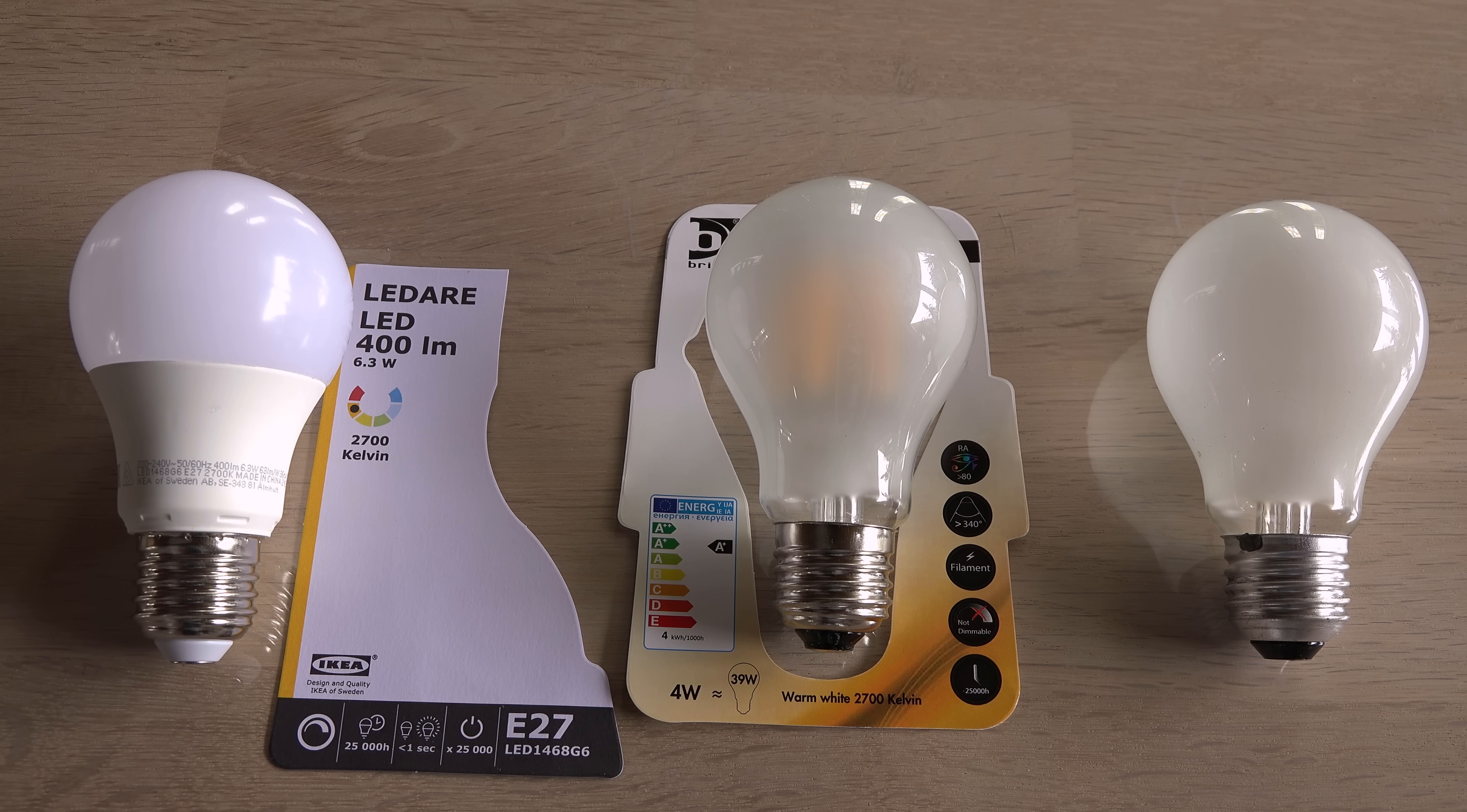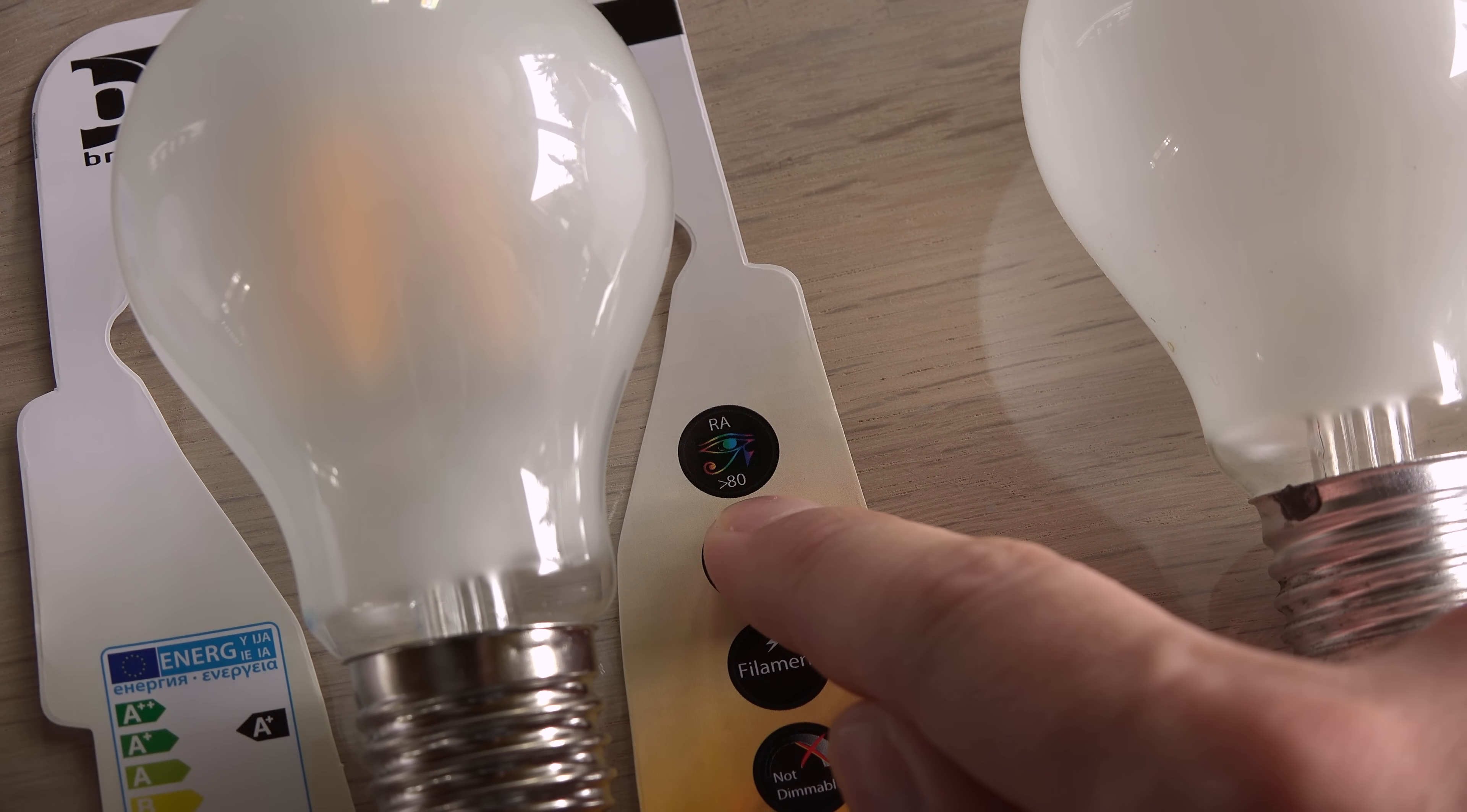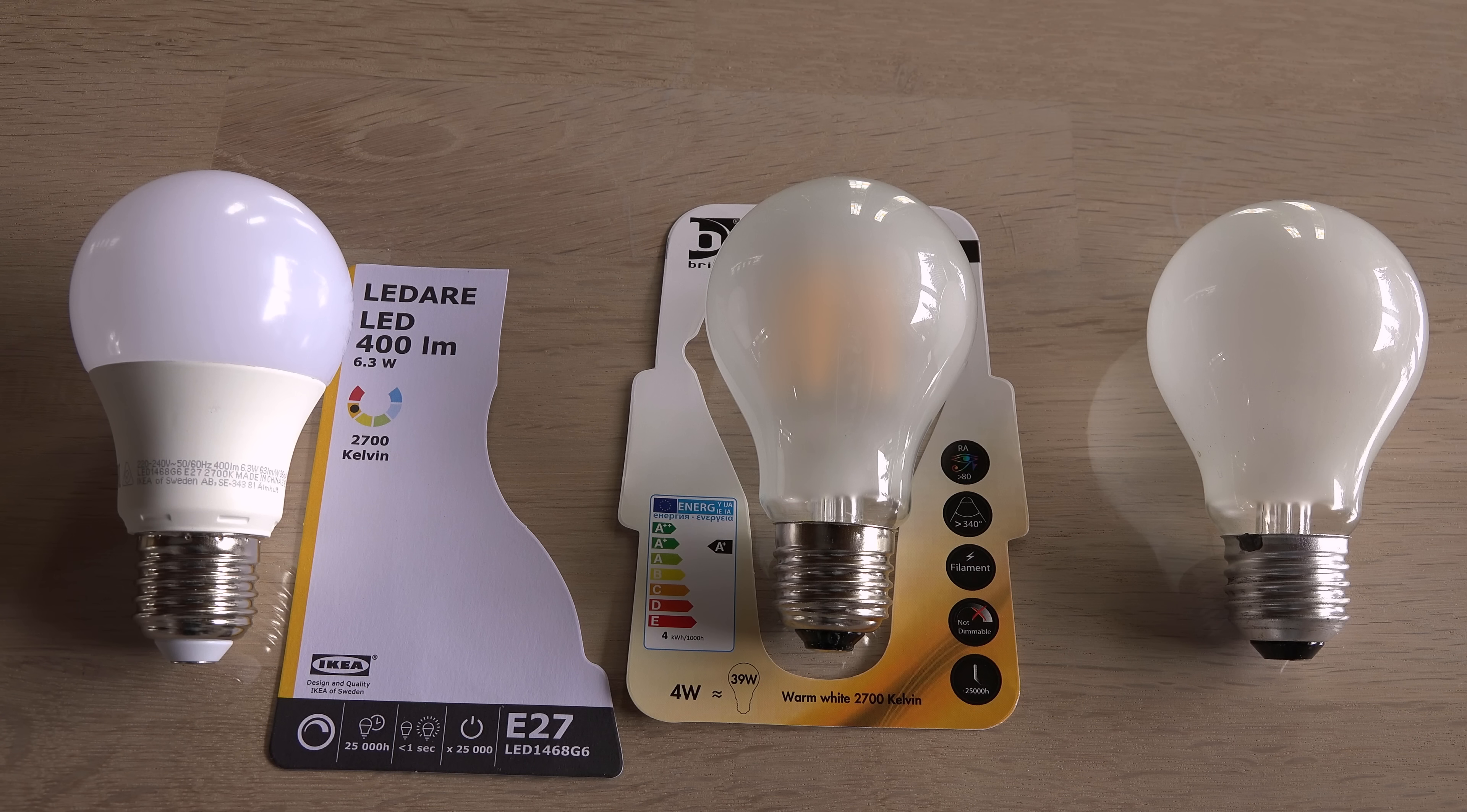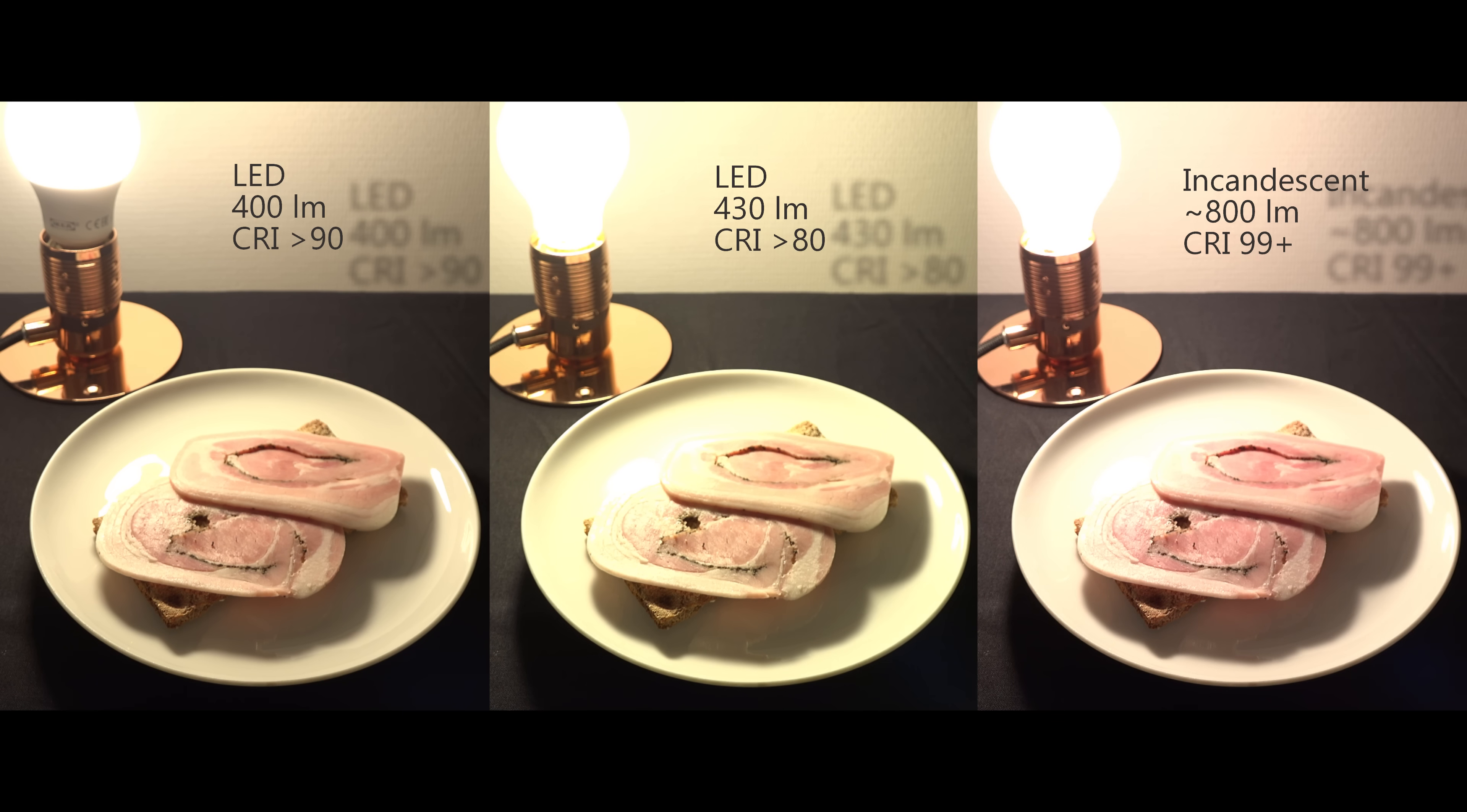And test with these 3 bulbs that are fairly similar except for the color rendering. This LED has a rendering index above 80. This other LED is above 90 and the incandescent bulb is close to 100. I filmed each bulb with the camera locked to the exact same setting so the difference in the 3 recordings is only the bulb. Here's the side by side comparison.